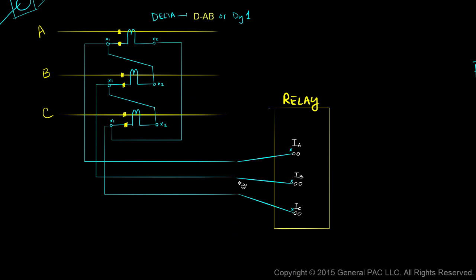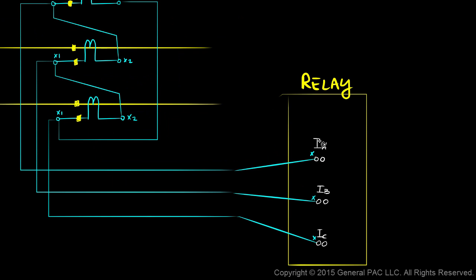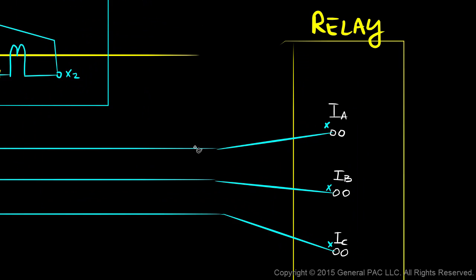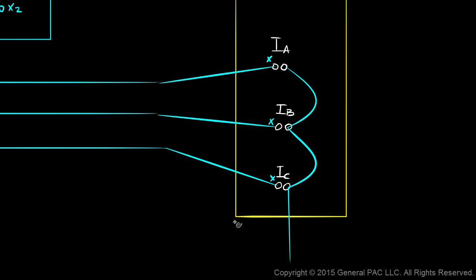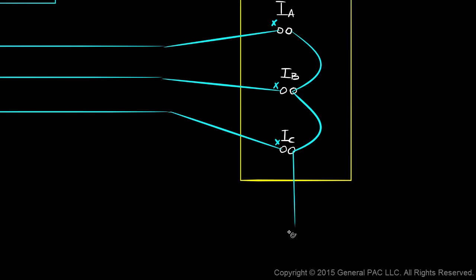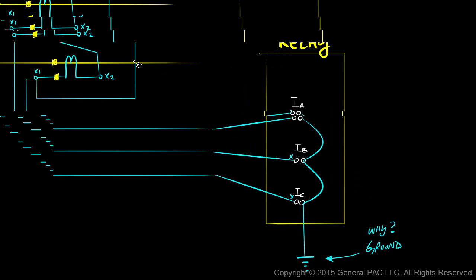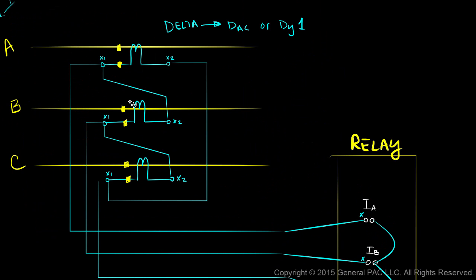Next, we connect the non-polarity side of our relay input terminals together: the non-polarity side of input terminal A is jumpered to the non-polarity side of input terminal B, which is jumpered to the non-polarity side of input terminal C, and that is grounded. Why we ground this side is a discussion for a different module, but for now let's focus on the current flow for our delta-connected CTs.